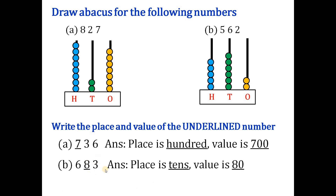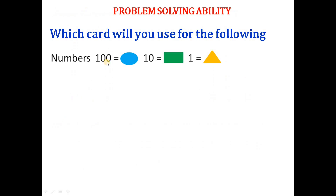Next: show the place value for the following numbers using shapes — a circle represents 100, a rectangle represents 10, and a triangle represents 1.